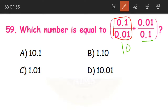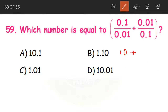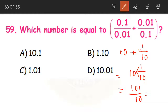The second fraction 0.01/0.1 is the reciprocal of the first, so it equals 1/10. Now we add: 10 plus 1/10. Written as a mixed fraction that is 10 and 1/10. Converting to improper fraction: 10 tens are 100 plus 1 = 101/10. As a decimal, denominator is 10 so we place the decimal point after 1 digit from the right. Our answer is 10.1.